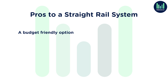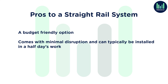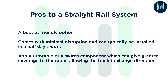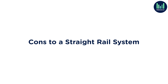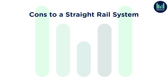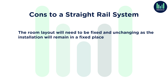A straight rail system uses a single track across the room for hoisting. It's a viable design layout when you're looking to simply hoist your service users just from two points of movement within the room — from point A to point B. A straight rail system is a budget-friendly option as it's the simplest option available, and it comes with minimal disruption, typically installed in half a day's work.